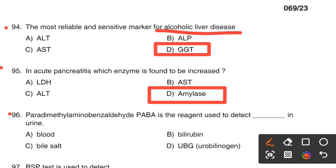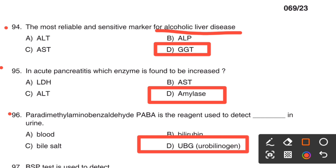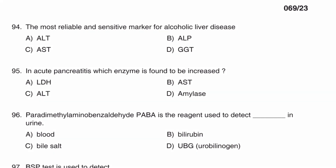Next question. Paradimethylaminobenzaldehyde (PDAB) is the reagent used to detect dash in urine. Option A, Blood. Option B, Bilirubin. Option C, Bile salt. Option D, Urobilinogen. The right answer is Option D, Urobilinogen. Paradimethylaminobenzaldehyde is used for urobilinogen detection.